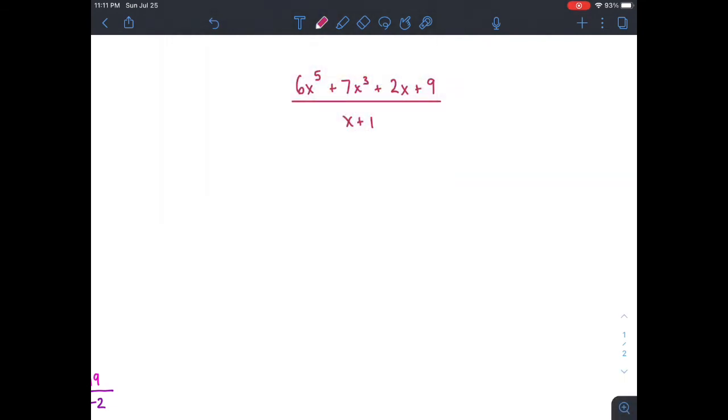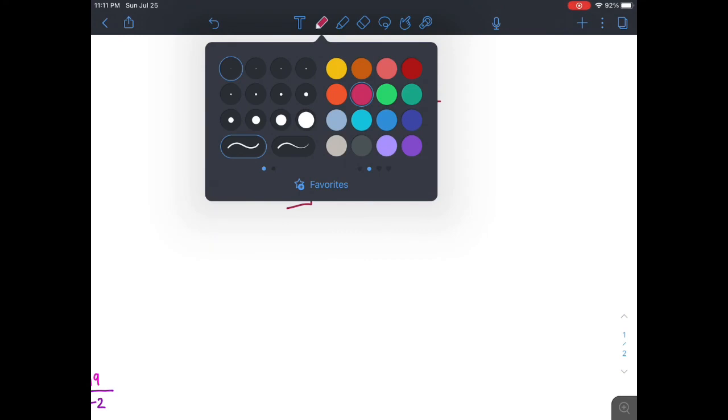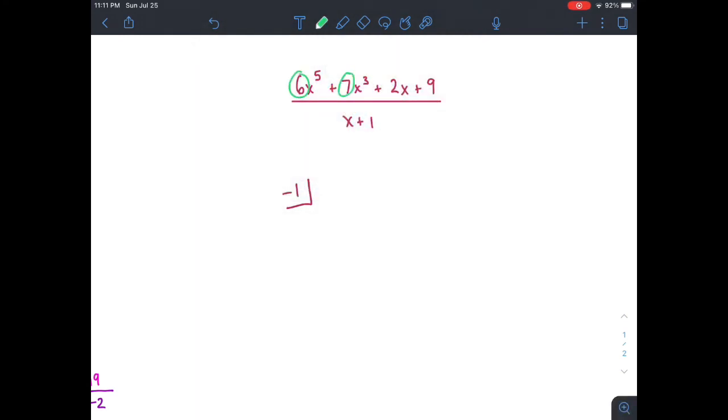So find the root of this right here. And that's just negative 1. So we write that off in a box to the side. Then we identify our coefficients. And a common mistake is to ignore the terms that aren't there. But in this case, x to the 4th and x squared are not there. But we have to write it as 0 or else our method will not work.